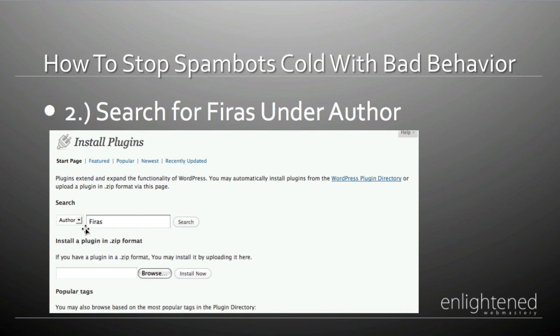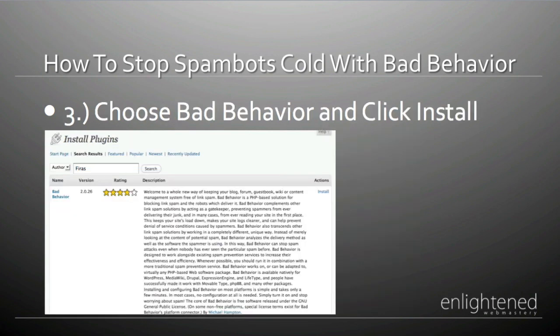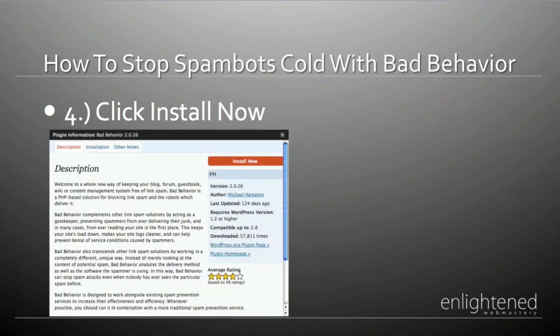At the time of creating this video, WordPress would not show Bad Behavior when typed in as a term, so I chose the author with the shortest name to use the automatic feature. After you click the button, you're going to see a list of options. Currently at the top you're going to see Bad Behavior — choose that. If not, scroll down a little bit and then click the Install option. You'll see a pop-up with more about the plugin, including installation notes, average rating, and the last day it was updated. Click the Install Now button at the top.